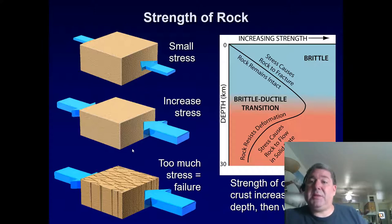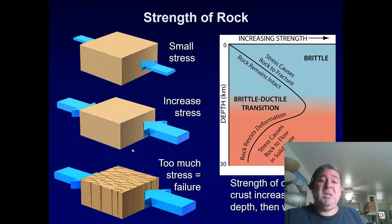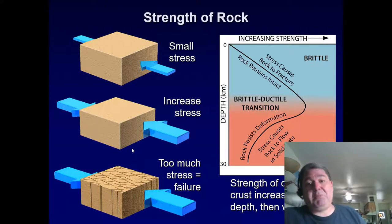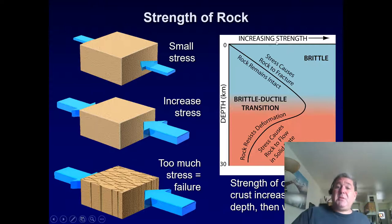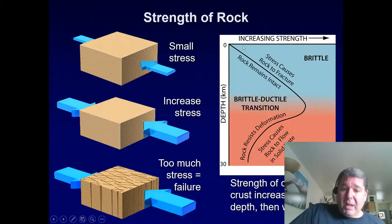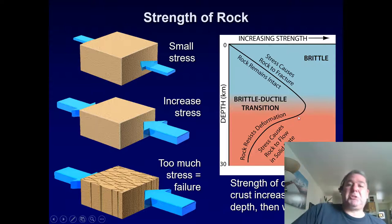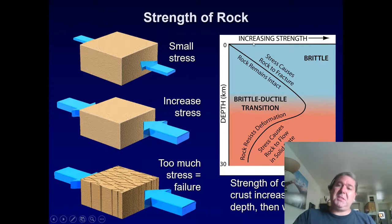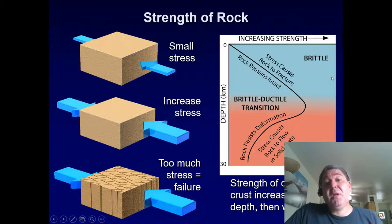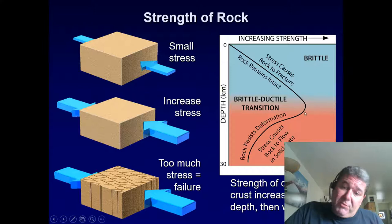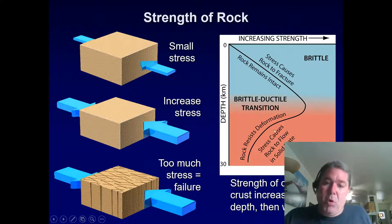Deformation comes in two kinds: brittle deformation — fracturing and cracking — and ductile deformation — bending and flowing. This change happens as we go deeper into the Earth. Rocks at or near the surface tend to be affected by brittle deformation, while rocks at depth are affected by ductile deformation. Ductile deformation causes rocks to flow in a solid state, which is metamorphism.